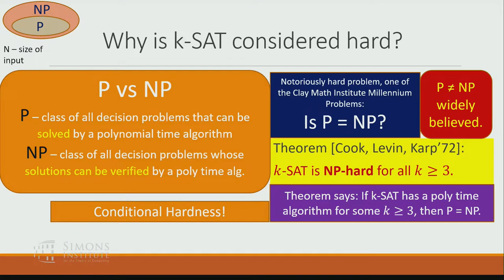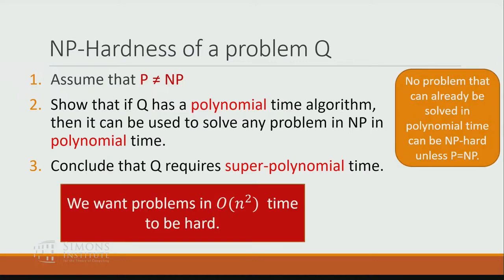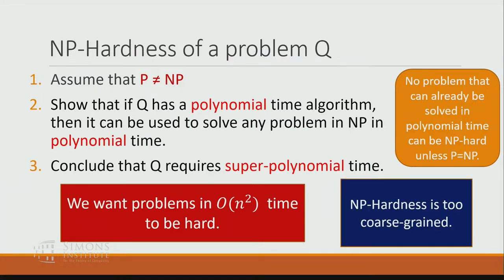k-SAT is hard because it's NP-hard. If k-SAT has a poly-time algorithm for some k ≥ 3, then P = NP. Under the widely believed conjecture that P ≠ NP, we can conclude that k-SAT does not have a poly-time algorithm. So this is conditional hardness: under the conjecture that P ≠ NP, k-SAT requires super-polynomial time. This framework can show super-polynomial conditional lower bounds for all NP-hard problems. However, we cannot use this framework to show hardness for problems that already have polynomial running time — such as LCS. In other words, NP-hardness is too coarse-grained for our purpose.